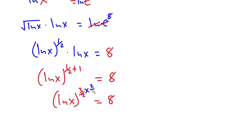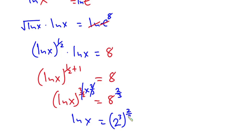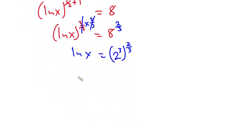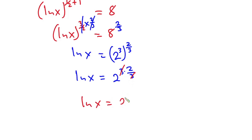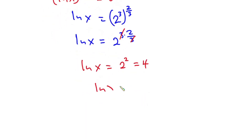Let's multiply the exponent on each side by two over three so that it cancels. We have natural log of x is equal to 8 to the power two over three. Now 8 is the same as 2 to the power 3, so we have 2 to the power 3 times two over three. The threes cancel, giving us natural log of x is equal to 2 squared, which equals 4.